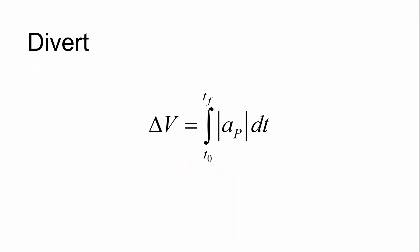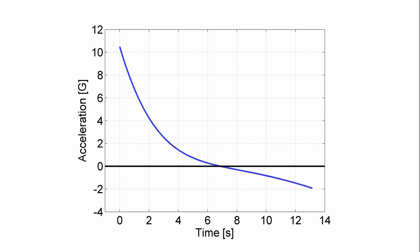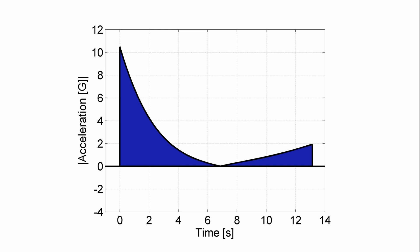Let's talk about control effort. The divert metric is the integral of the acceleration magnitude over the engagement. It quantifies the amount of effort that's expended by an interceptor. To illustrate, consider this acceleration profile for an augmented pronav simulation. Taking its absolute value and then integrating to obtain the area under that absolute value, we get the divert.